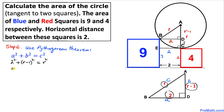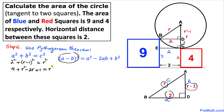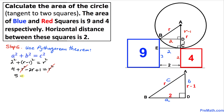Let's simplify. 2² = 4, and expanding (r − 1)² using the formula (a − b)² gives r² − 2r + 1. So we have 4 + r² − 2r + 1 = r². The r² terms cancel on both sides, leaving 4 + 1 − 2r = 0, which simplifies to 5 − 2r = 0. Therefore r = 5/2.